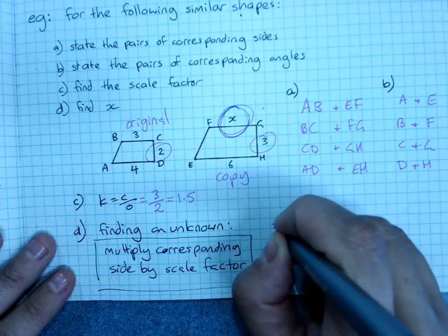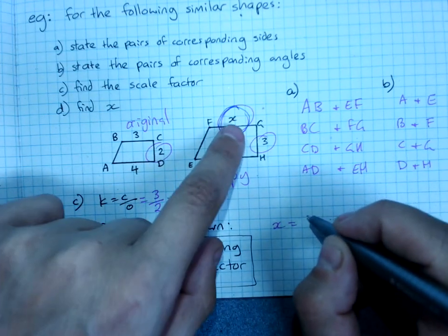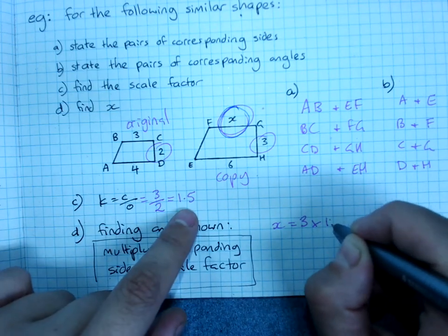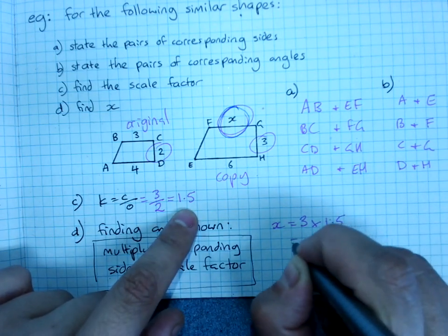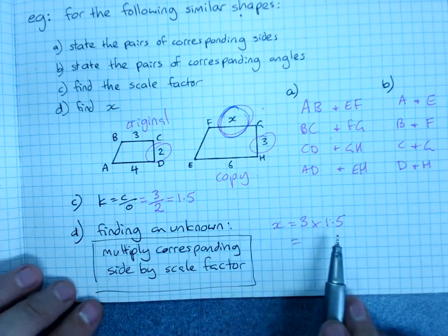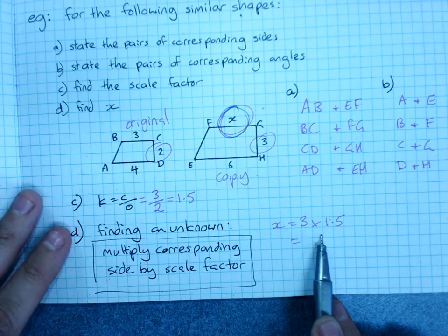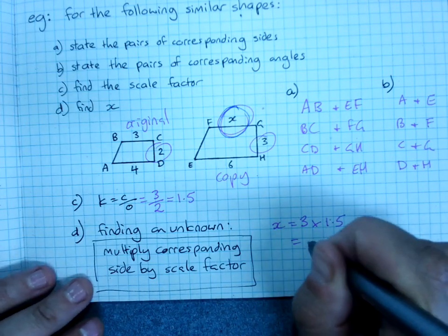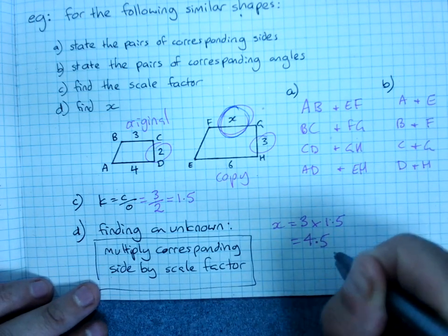So, to find X, X equals its corresponding side times the scale factor of 1.5, and 3.5 times 1.5. If you want to grab a calculator, you can, or you can work out that that's 4.5.